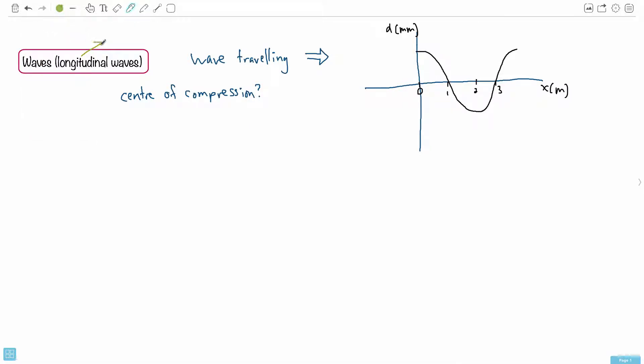What does a longitudinal wave mean? Maybe that really helps to know. A longitudinal wave is a wave where the travel direction, the direction of travel, is parallel to the oscillation.